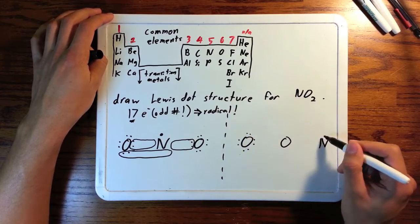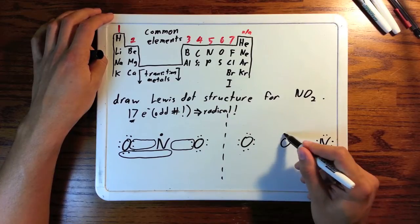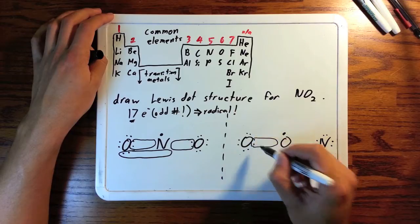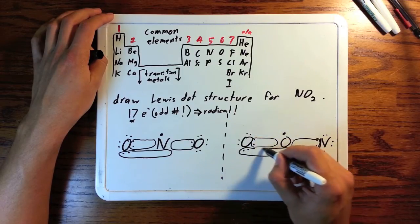Now we'll do the same procedure for the other possible configuration of this molecule. Fill up the outside atoms using 16 electrons, and there's one left over, we'll put it on the center. Draw bonds to give it more electrons, so that we get 7 in the middle. And now we have this.